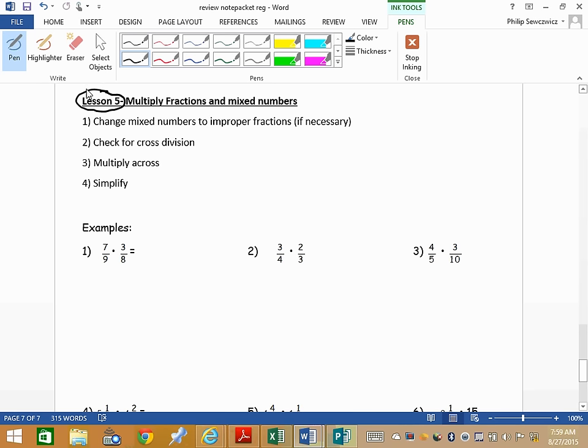All right, everyone. This is lesson number five. We are multiplying with fractions and with mixed numbers. What we want to watch for here is, with multiplying with fractions, we do not need common denominators. No common denominators, which is nice, because obviously that's where a lot of the work was going. So when we multiply, we don't need any common denominators.